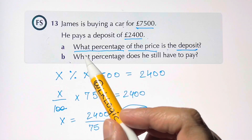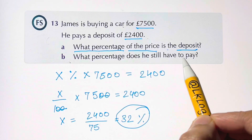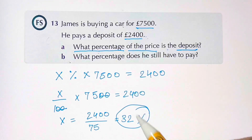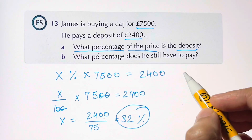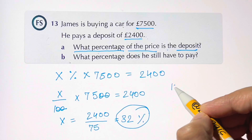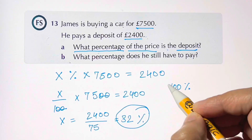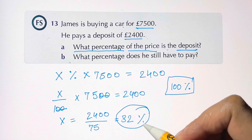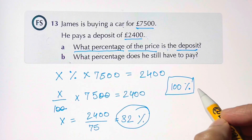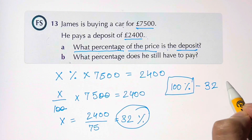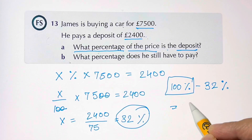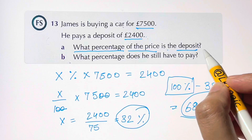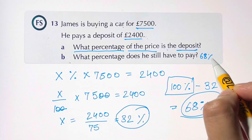For the second question — what percentage does he still have to pay? He has already paid thirty-two percent. So out of one hundred percent, he still needs to pay one hundred minus thirty-two, which equals sixty-eight percent.